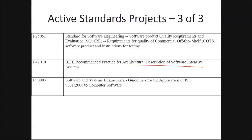Then you have IEEE recommended practice for architectural description of software intensive systems, and P9003 which covers software and system engineering guidelines for the application of ISO 9001-2000 to computer software. So IEEE also talks about how to implement ISO 9001-2000 and what the guidelines are for using it with computer software.